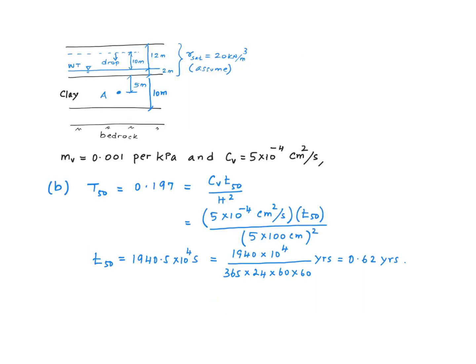Here are the calculations for finding little t 50. Remember this number, right? Time factor at 50% consolidation is 0.197. So using this equation, we can find a value for little t 50. We have a value for c sub v, which is 5 times 10 to the minus 4 centimeters squared per second. And this is a doubly drain problem. We have a sand layer here, a sand layer here, right? And therefore, h to be used in this equation would be half the thickness of the clay layer, which is 5 meters.